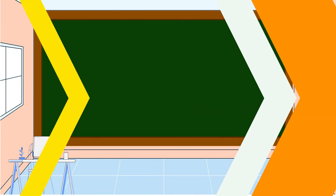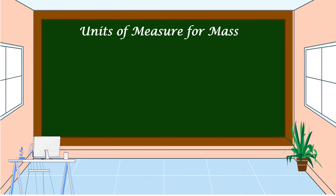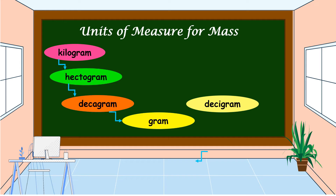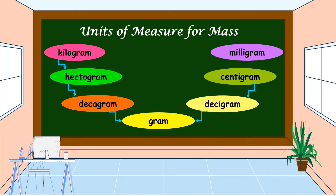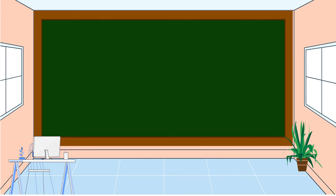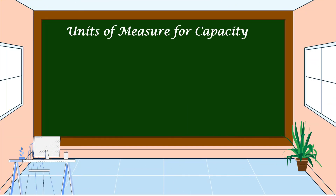The units of measure for mass are: kilogram, hectogram, decagram, gram, decigram, centigram, and milligram.